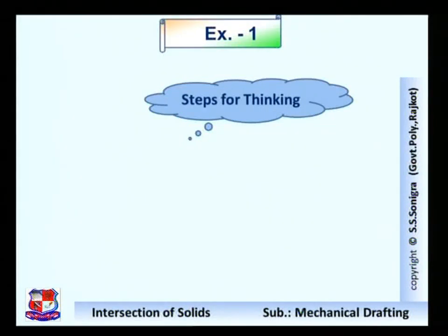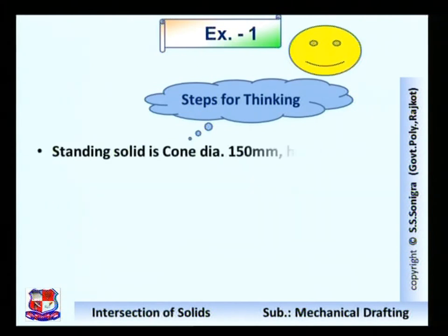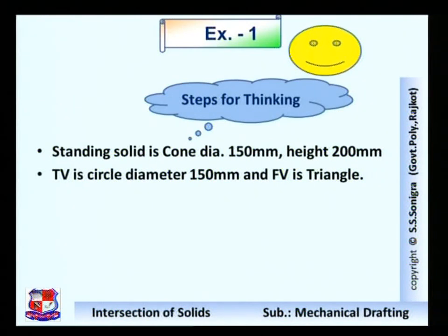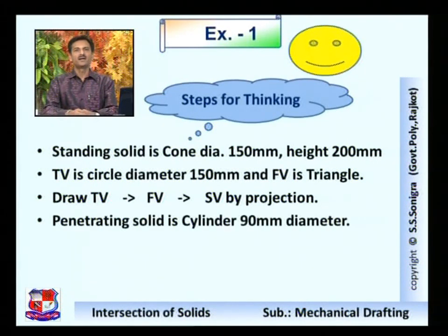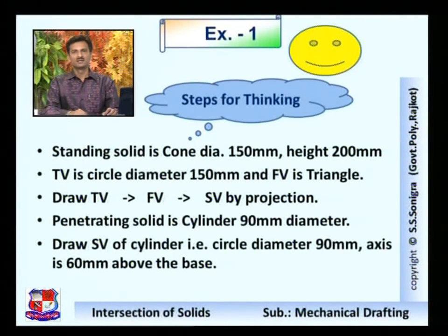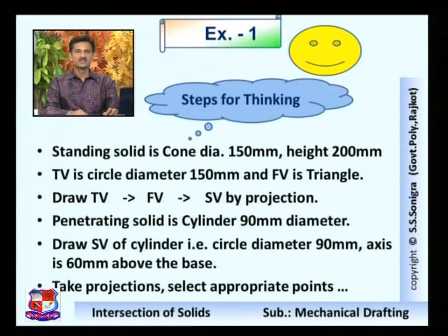Steps for thinking through this problem: the first step — the standing solid is a cone with diameter 150 mm and height 200 mm. The top view is a circle of diameter 150 mm and the front view is a triangle. Draw top view, front view, and side view by projection. The penetrating solid is a cylinder of diameter 90 mm. Draw the side view of the cylinder as a circle of diameter 90 mm; its axis is 60 mm above the base. In the side view, the circle center should be 60 mm above the XY line. Take projections, select appropriate points, and draw the curve of intersection — since the cylinder creates a curved shape, the intersection will be a curve, not straight lines.